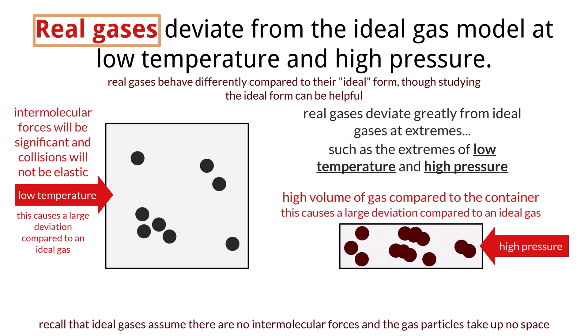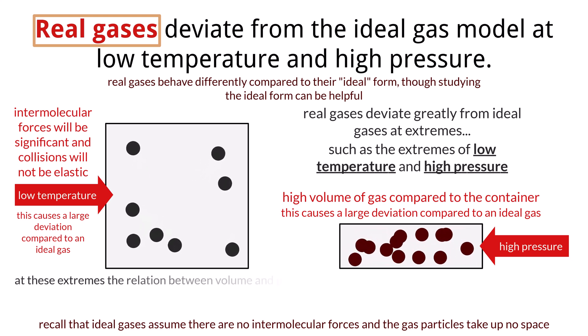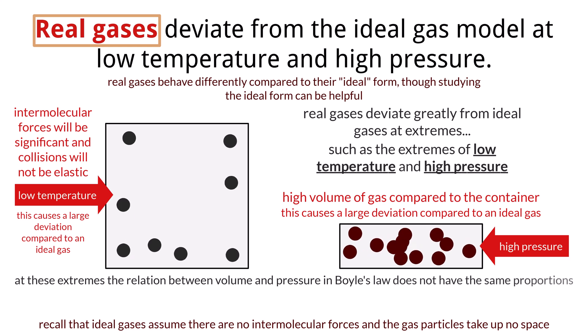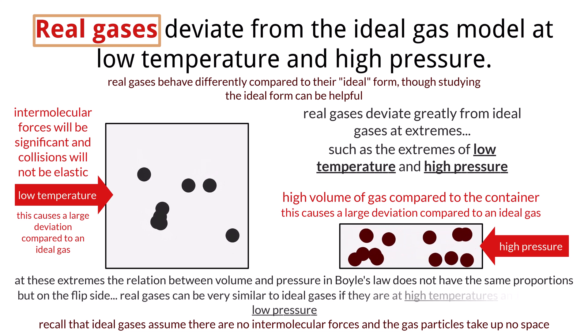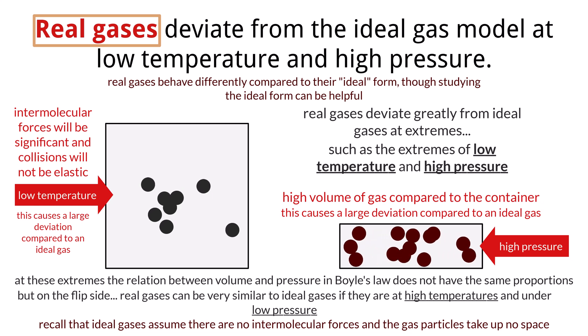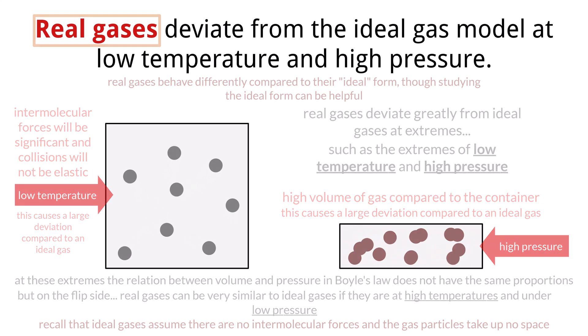In either of these cases, Boyle's law that we learned about on the last slide which relates pressure and volume, no longer have the same proportional relationship. Real gases can be put into situations in which they can behave similar to their ideal calculated state, which means they would have to have a low pressure and high temperature. In either case, knowing the limitations and being able to compare an ideal gas from a real gas is an important point for the exam.